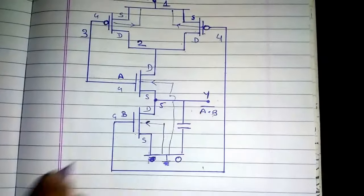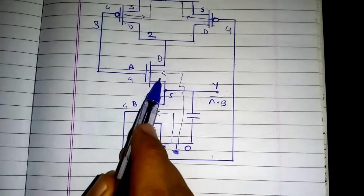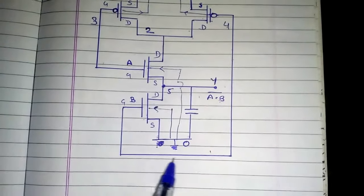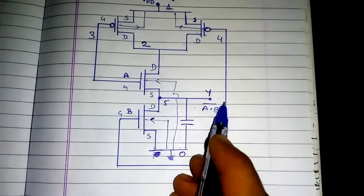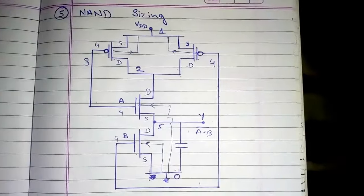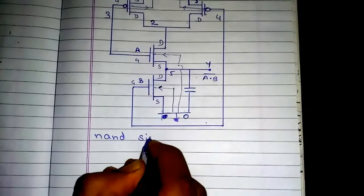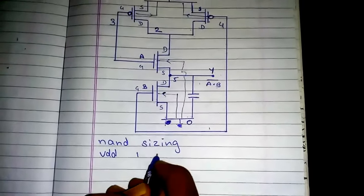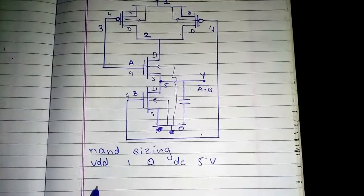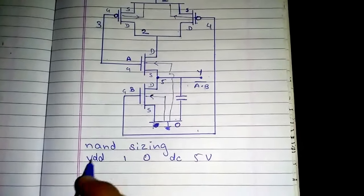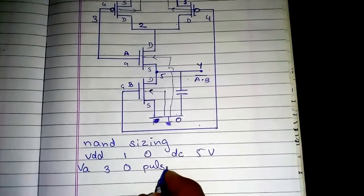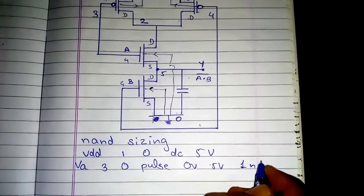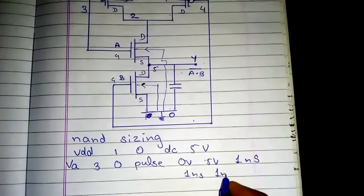Since there is no connection, I will name the source node as 5. So for NMOS one: drain at 2, gate at 3, source at 5. For NMOS two: drain at 5, gate at 4, source at 0, body at 0. The capacitor is between 5 and 0, and the output is at node 5. Now the first line of code will be the title 'NAND sizing', then VDD between nodes 1 and 0, DC 5 volts. VA will be a pulse between 3 and 0, going from 0 volts to 5 volts.